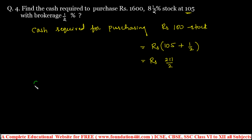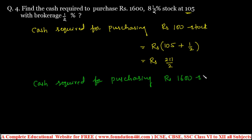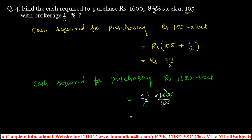105 + 1/2 = 211/2. So cash required for purchasing rupees 1600 stock = 211/2 × 1600/100 = 211/2 × 16 = 211 × 8 = rupees 1688. The answer for this question is rupees 1688.